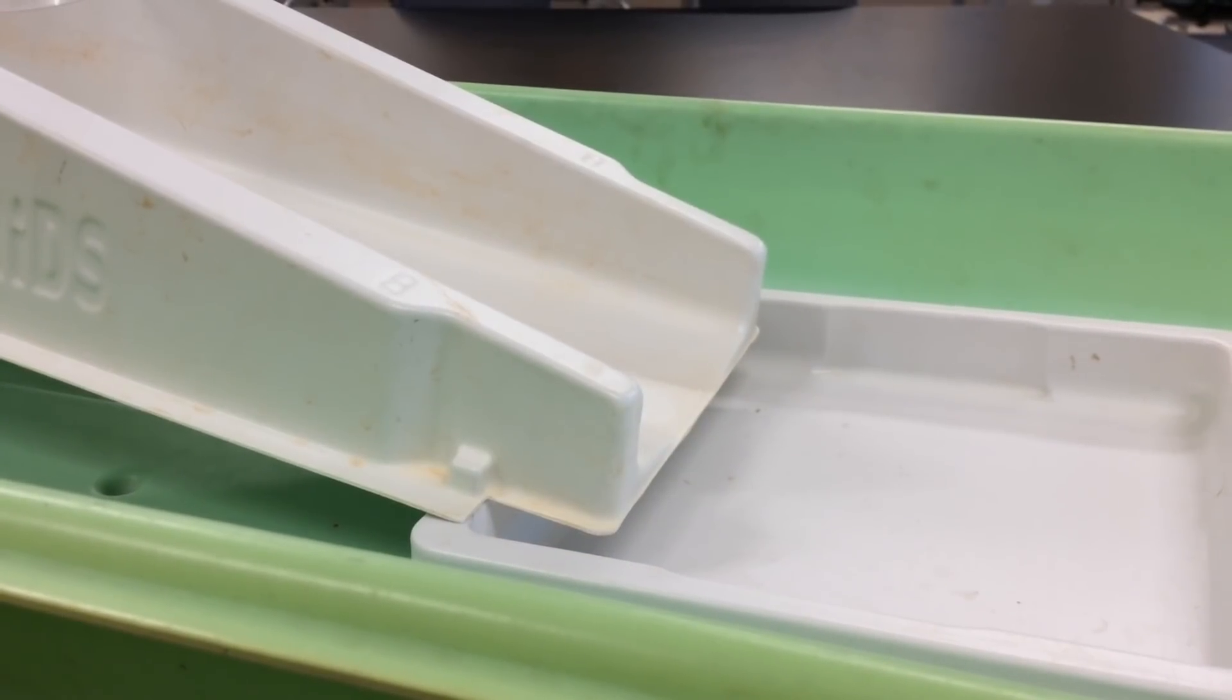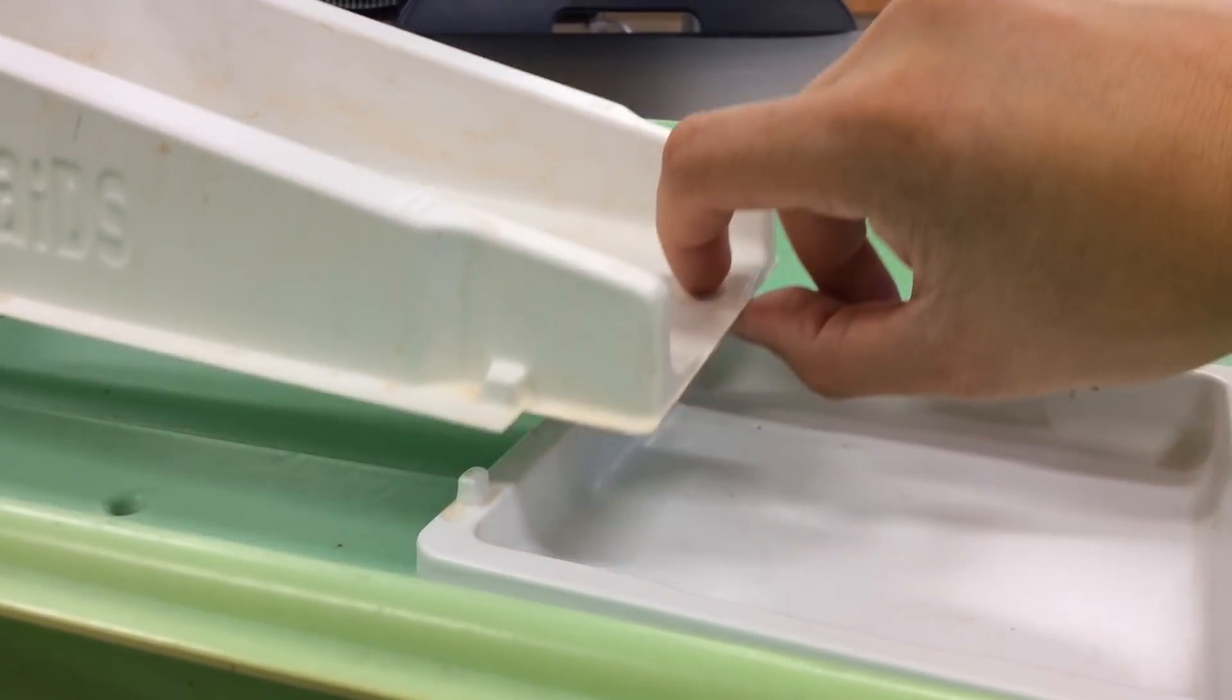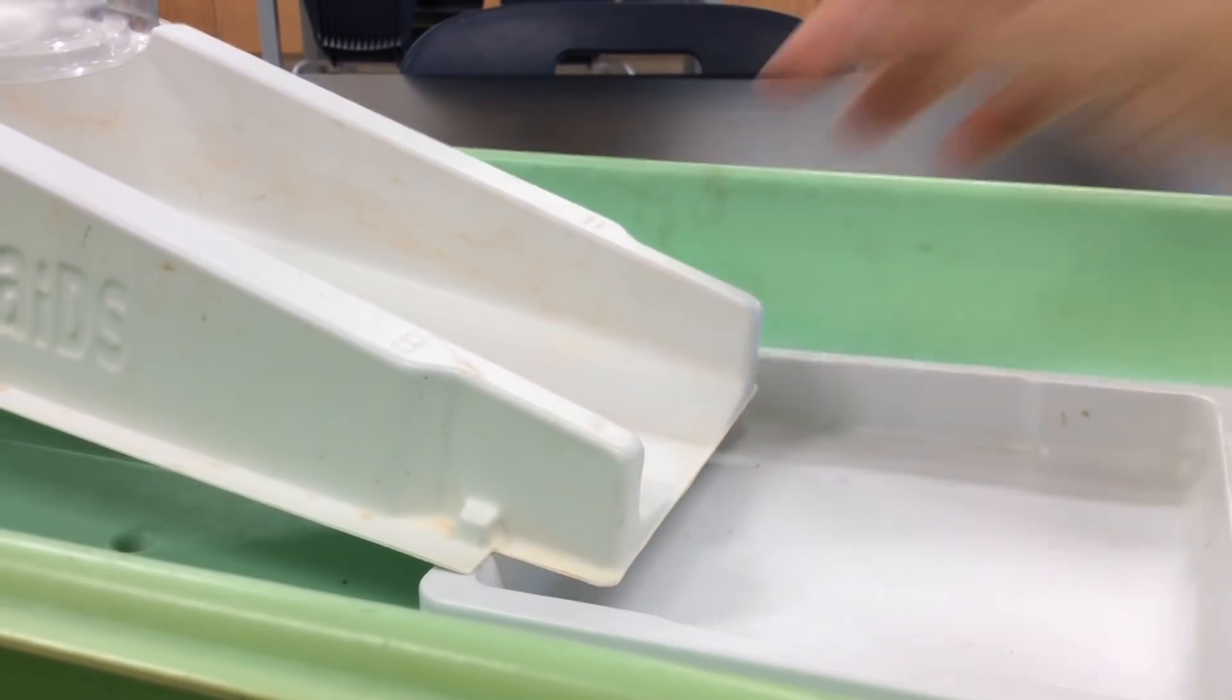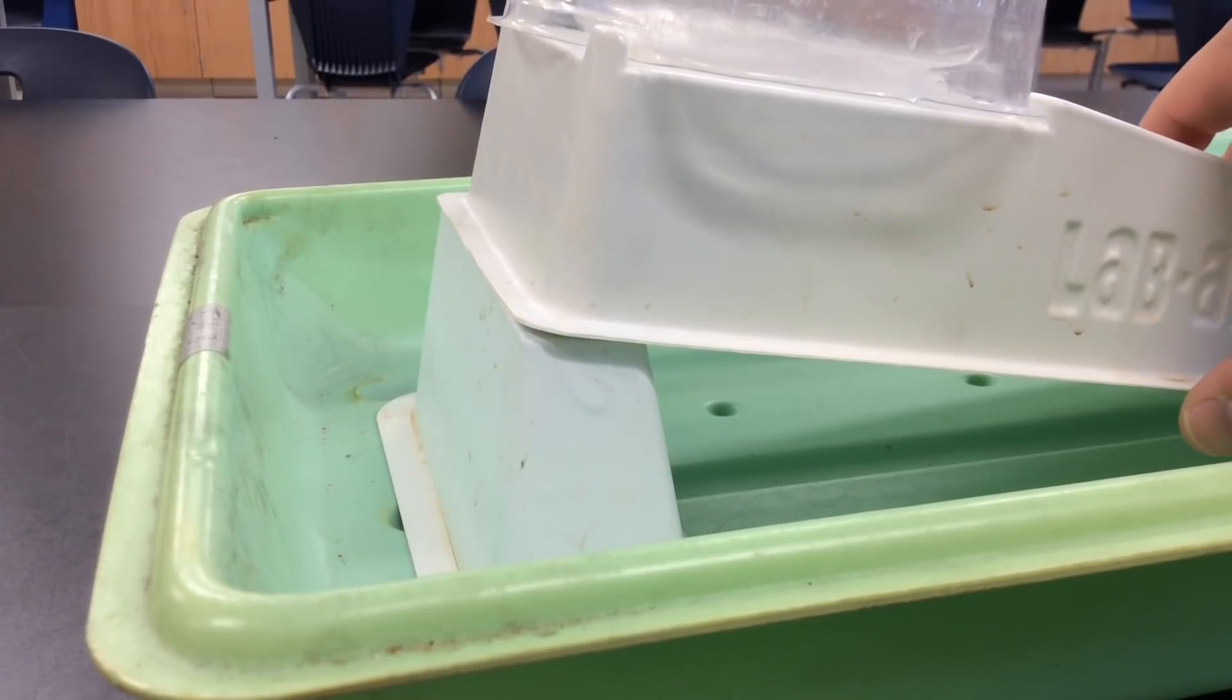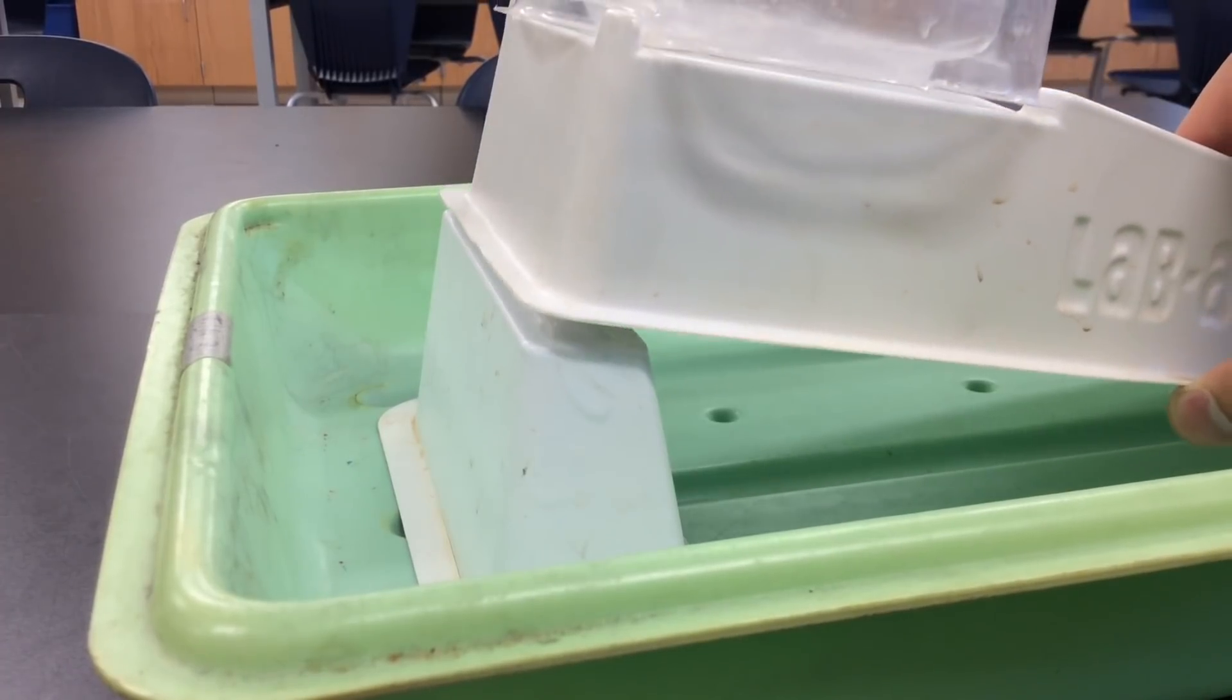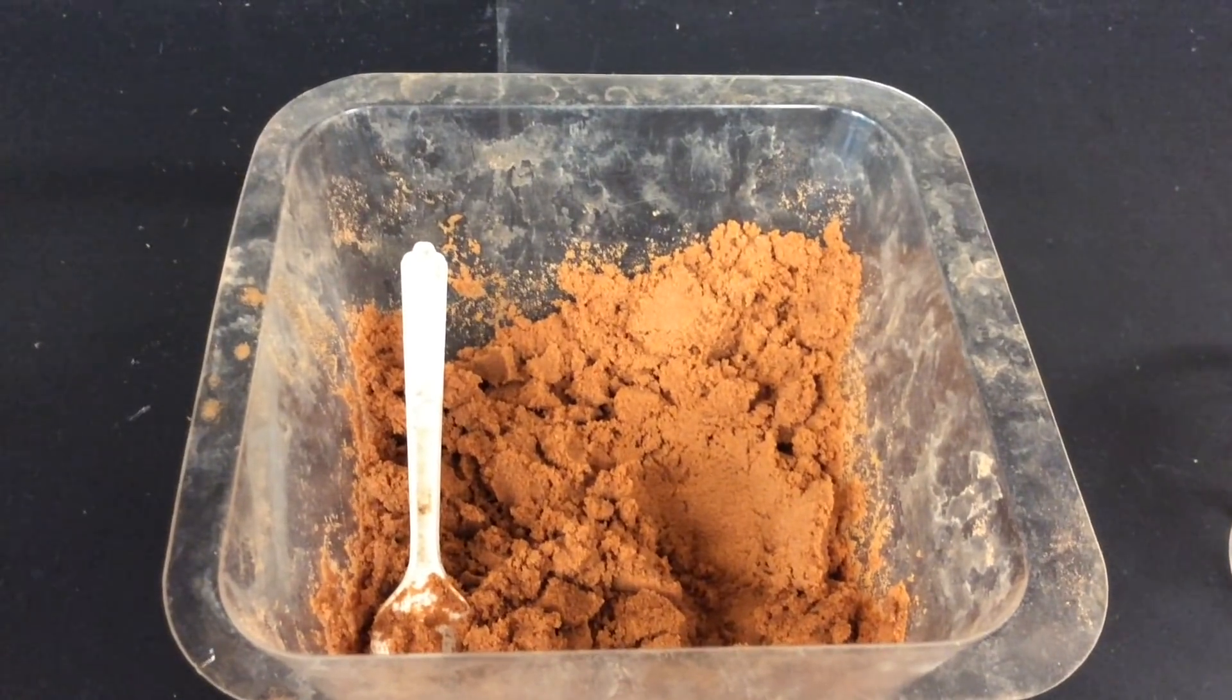There are just a few things I want to point out about setting up the river model correctly. The first thing is that the catch basin in the front has two pegs. You want to make sure those pegs are securely locked into the slots for them on the actual river model. Second, the stand in the back has a little slant to the top of it. You want to make sure that the slant is pointing towards the front of the river model.